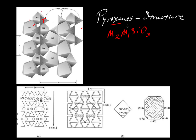The M1 is in six-fold coordination, but the M2, the way it's shown here, looks like it's in eight-fold coordination — so we'll draw Roman numeral eight here — although it doesn't have to always be eight-fold.